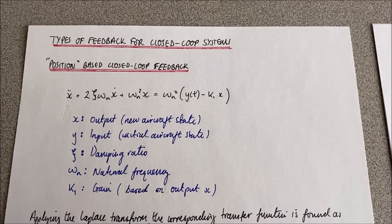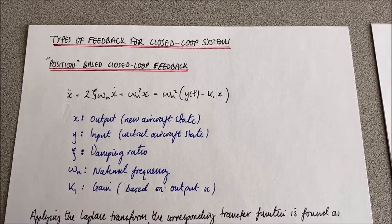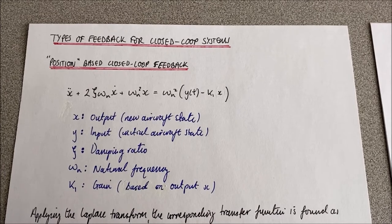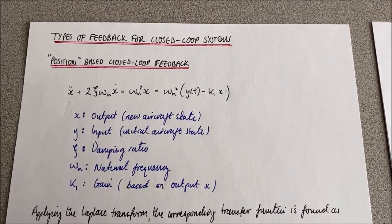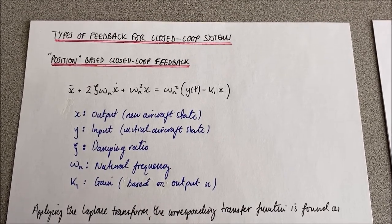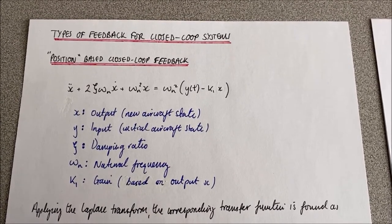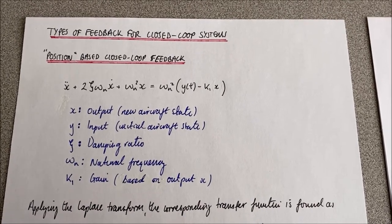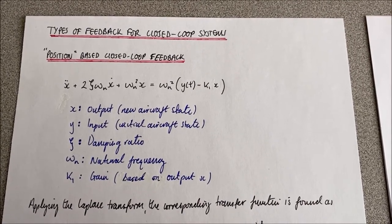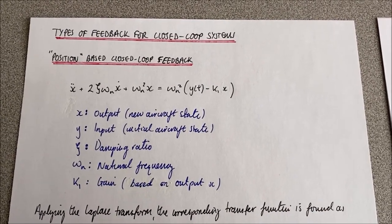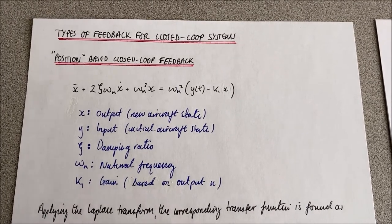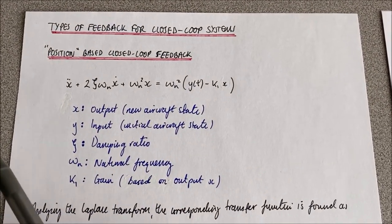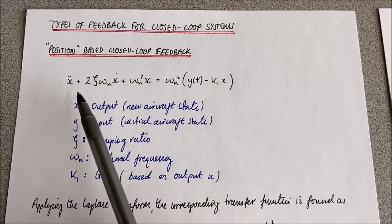We're now going to discuss three different types of feedback for closed-loop systems: position-based, rate-based, and acceleration-based closed-loop feedback, starting initially with position-based closed-loop feedback.